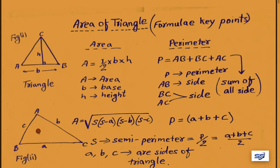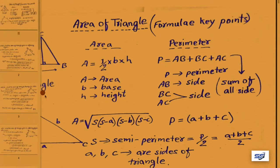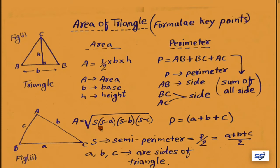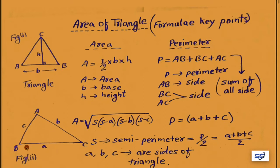When base and height are unidentified, finding the area will be a problem. To find the area of this triangle we use a new formula: A equals root under s(s minus a)(s minus b)(s minus c), where s is the semi-perimeter. Semi-perimeter equals P upon 2, which equals (a plus b plus c) upon 2. Here a, b, c are the sides of the triangle — a is BC, b is AC, and c is AB.